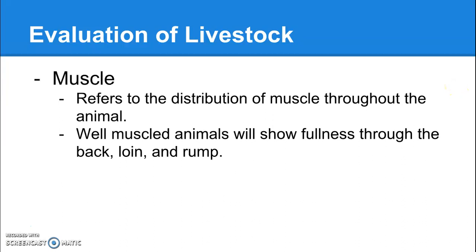Muscling refers to the distribution of muscle throughout the animal. You really want to look for fullness through the back, loin, and rump — this would indicate a well-muscled animal.